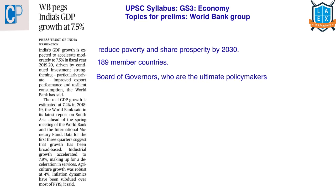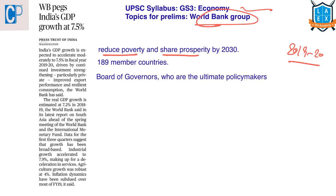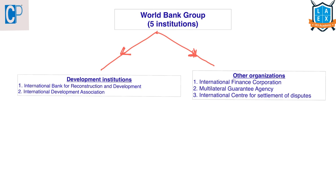The next article is 'World Bank Pegs India's GDP Growth at 7.5 Percent.' According to the World Bank, India's GDP growth is expected to accelerate to 7.5% in the financial year 2019-20. This article comes under GS Paper 3, economy. The World Bank is an international organization that helps emerging market and developing countries to reduce poverty and promote prosperity, with a goal to achieve this by 2030. It functions like a cooperative with 189 member countries, whose representatives — the Board of Governors — are the ultimate policy makers.